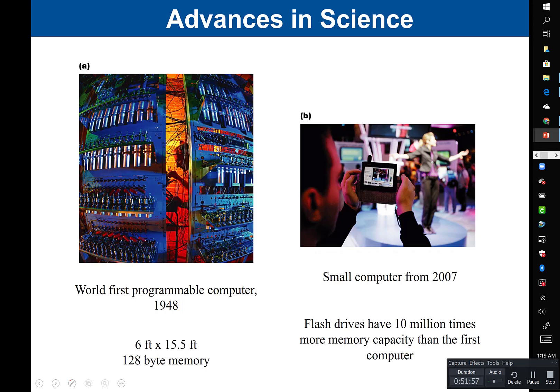It's interesting to see how far science has come. The world's first programmable computer, produced in 1948, was six feet by 15.5 feet with only 128 bytes of memory. By comparison, the small flash drives we use today have 10 million times more memory capacity than that massive computer. Science has come a long way.